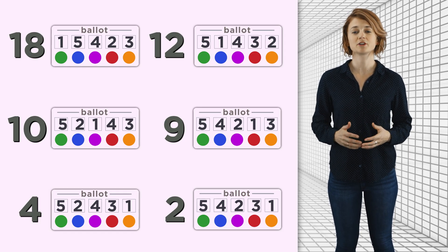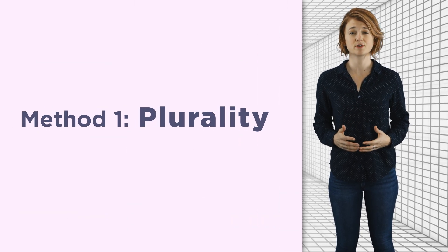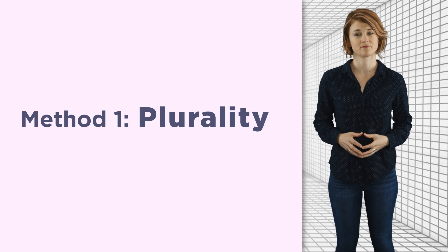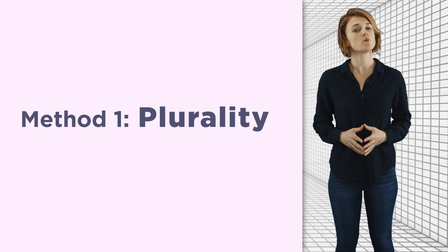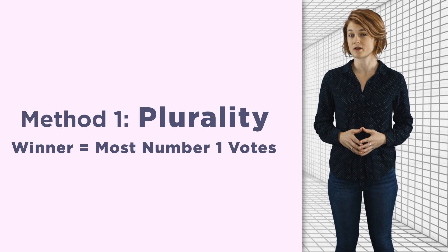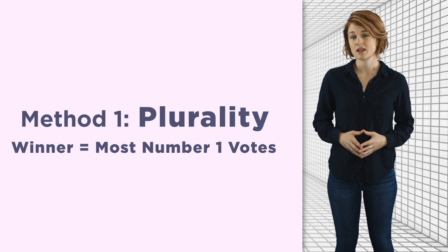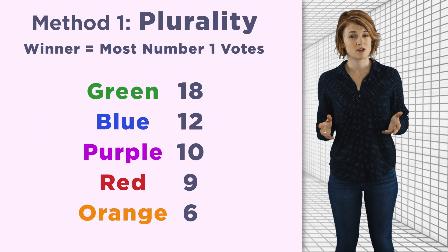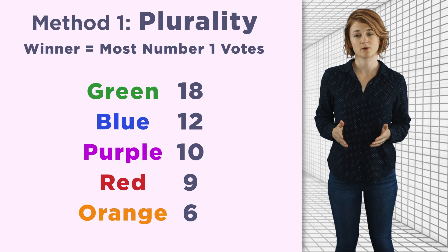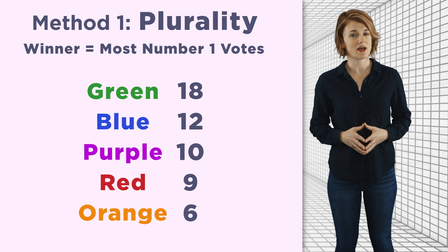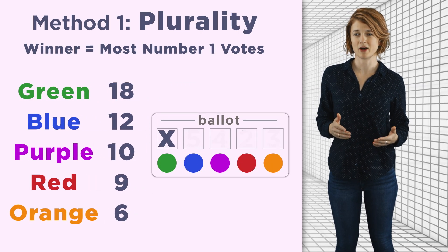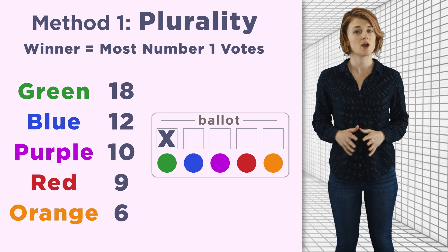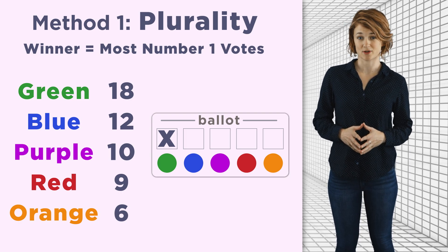First, we'll look at the plurality method, also known as first past the post. It's probably the simplest mathematically — the winner is the color with the most number-one votes. In our best color election, green is the plurality winner with 18 ballots ranking it number one. In practice, voters can just check one box since choices two through five don't matter. A plurality is not a majority — out of five colors, the plurality winner could have just slightly more than one-fifth of the votes.